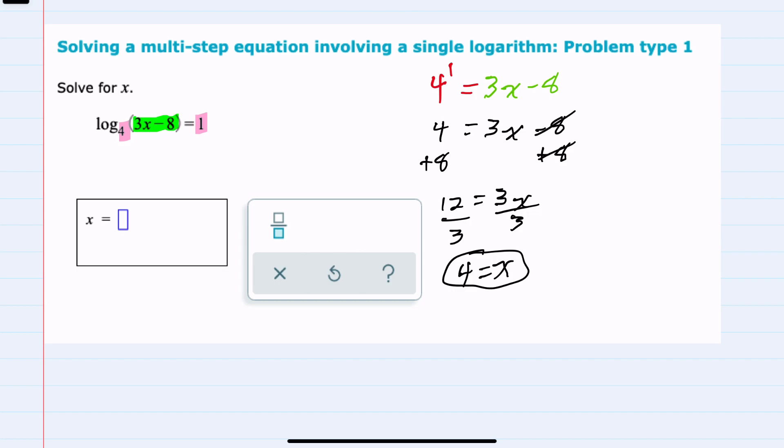And when substituting back in for x, we have the log base 4 of 3 times x, which is 12 minus 8. This does give us a positive number, 12 minus 8 is 4.